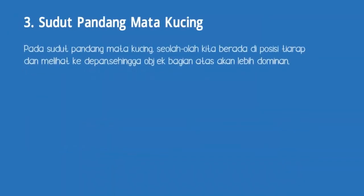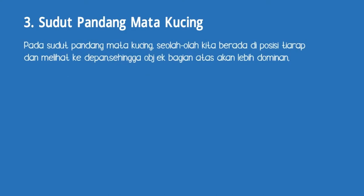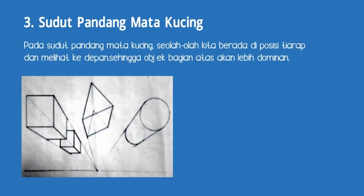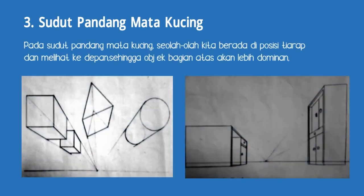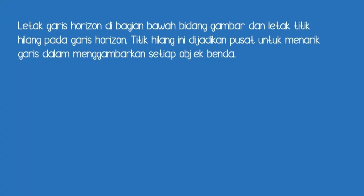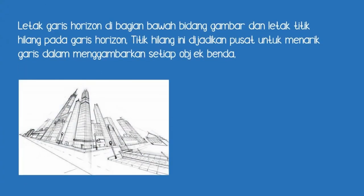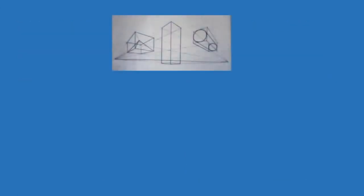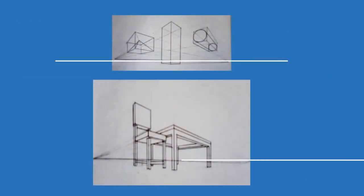Tiga, sudut pandang mata kucing. Pada sudut pandang mata kucing, seolah-olah kita berada di posisi tiarap dan melihat ke depan. Sehingga objek bagian atas akan lebih dominan. Letak garis horizon di bagian bawah bidang gambar, dan letak titik hilang pada garis horizon. Titik hilang ini dijadikan pusat untuk menarik garis dalam menggambarkan setiap objek benda.